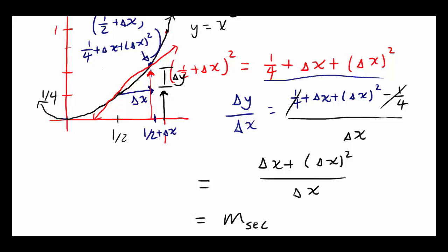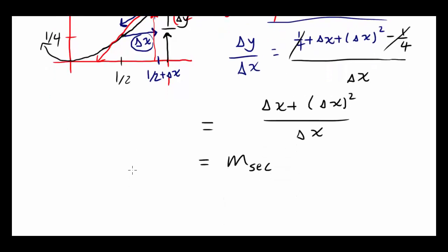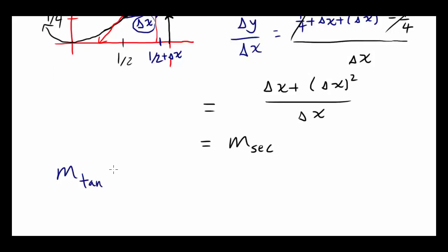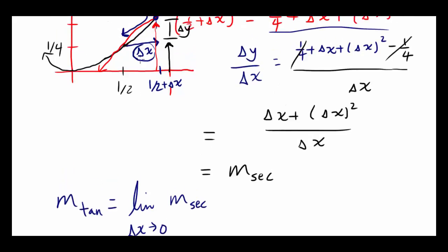We want to put this point ever closer to our original point, which we do by decreasing delta x. If delta x is 1, we are 1 away from 1 half. If delta x is 0.00001, we are very close to 1 half, and the slope of the second line gives a very good approximation of the slope of the tangent line. So we take the limit as delta x approaches 0 of our slope of the second line.